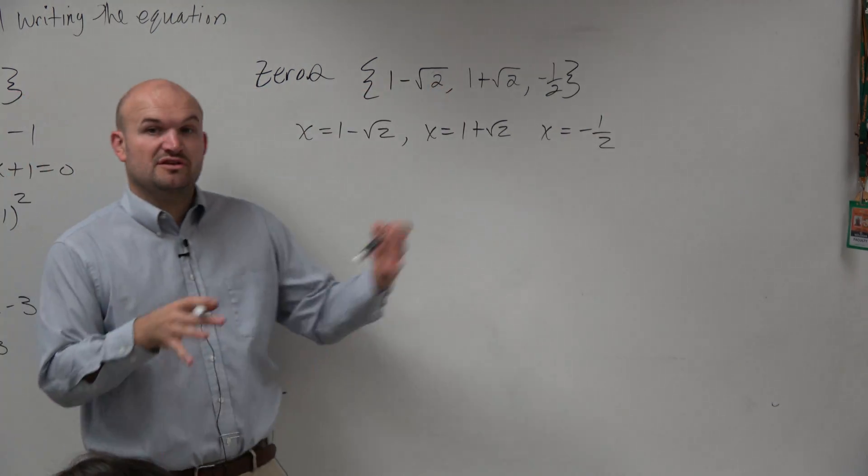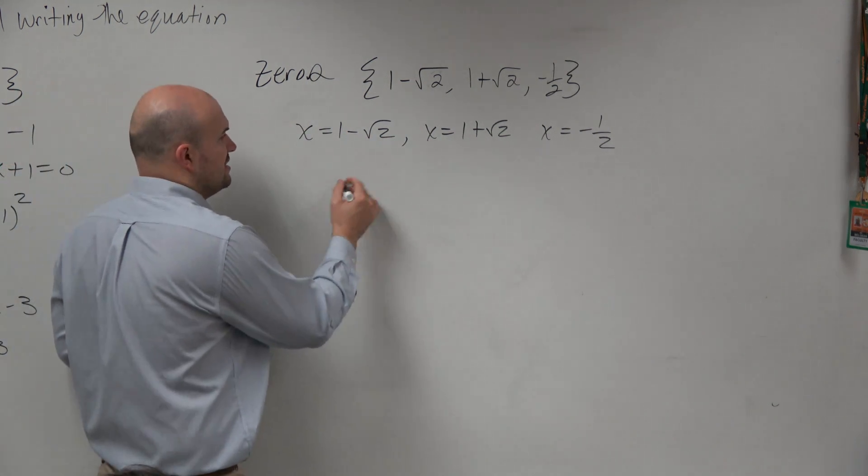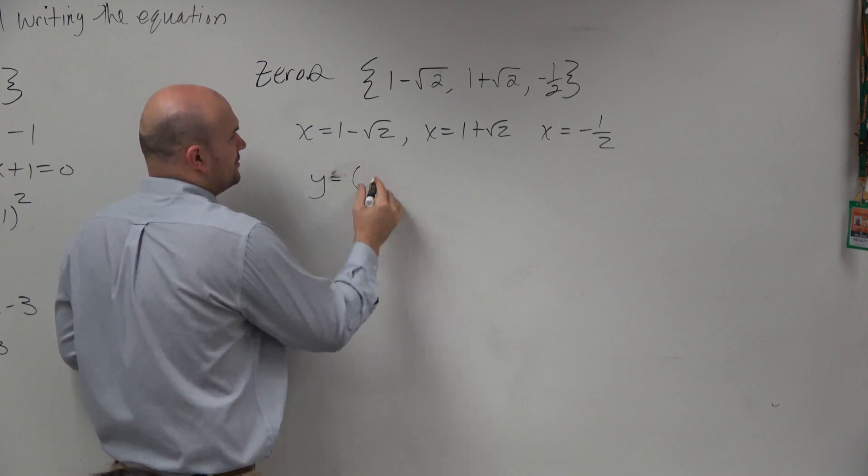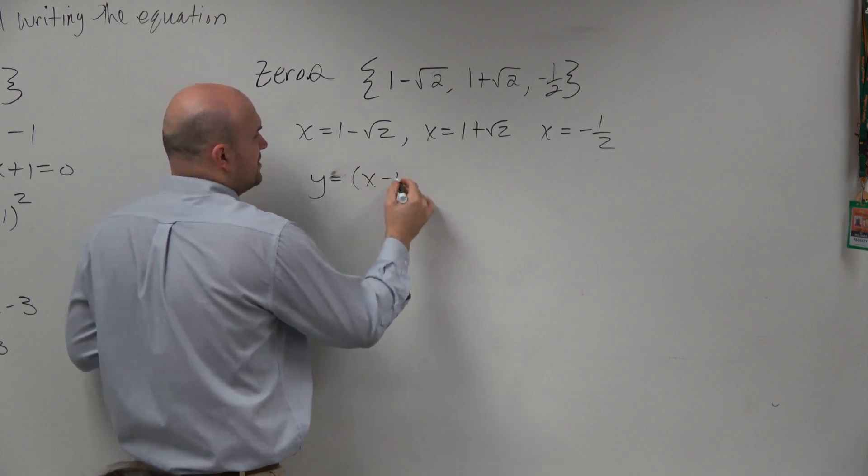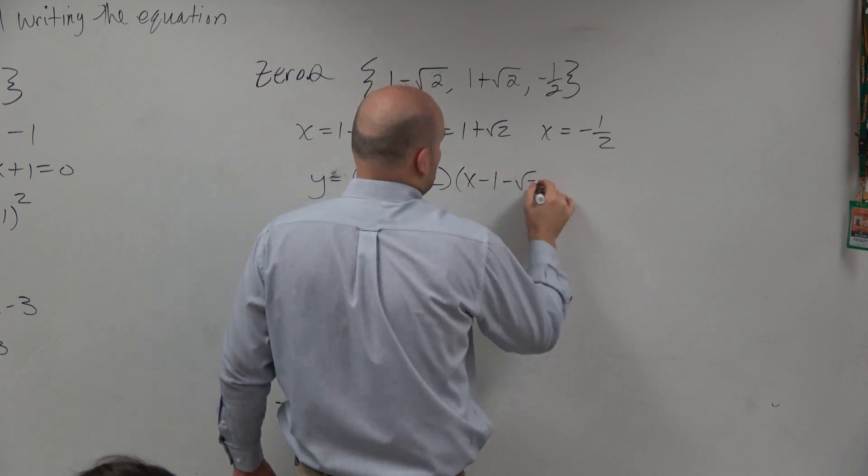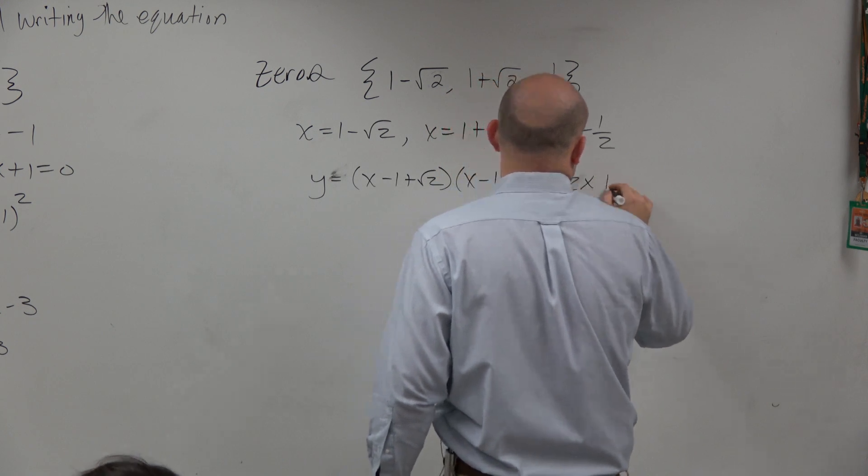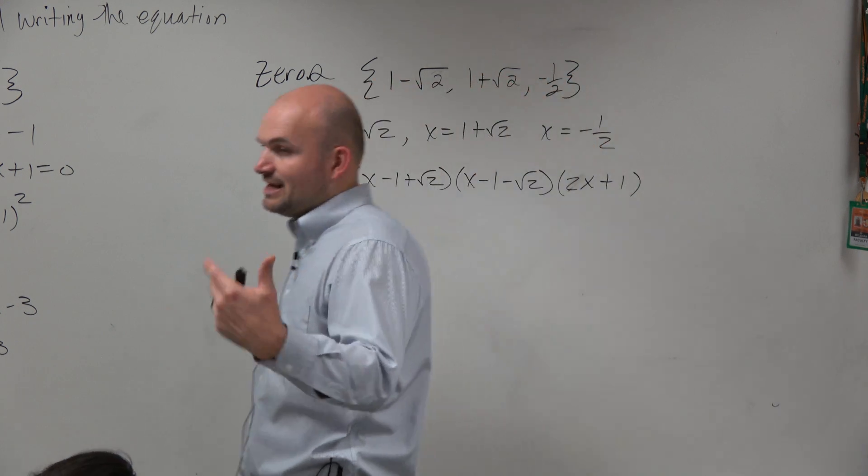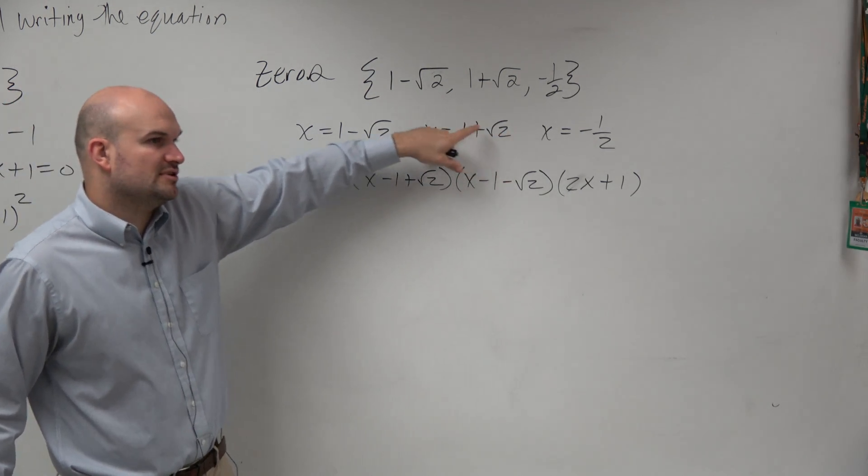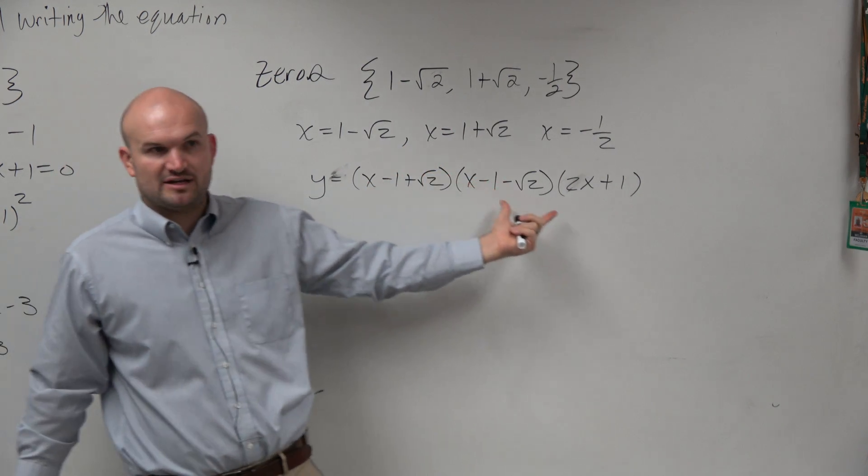Now I'm just going to go to the factored form. So I'm going to set these all equal to 0 by using my inverse operations, and I can rewrite my factors as y equals x minus 1 plus the square root of 2, times x minus 1 minus the square root of 2, times 2x plus 1. So how I got all those factors, because I'm doing this a little bit quicker for time purposes, is I just set them all equal to 0, and then whatever was equal to 0, I rewrote as my factors.